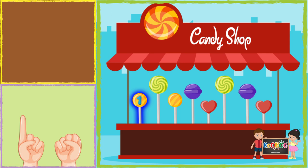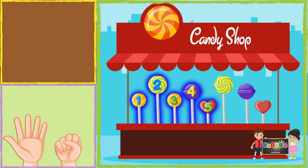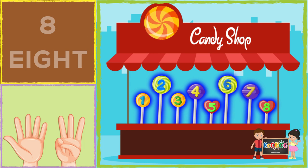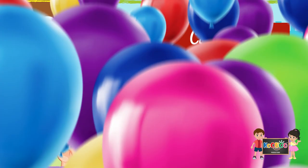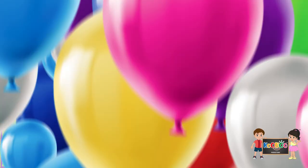Next, in the second image, we see how many chocolates. One, two, three, four, five, six, seven, eight. So we found eight chocolates.